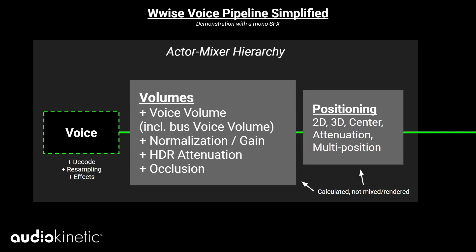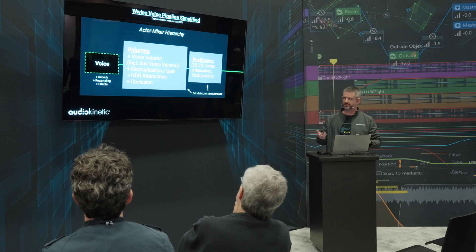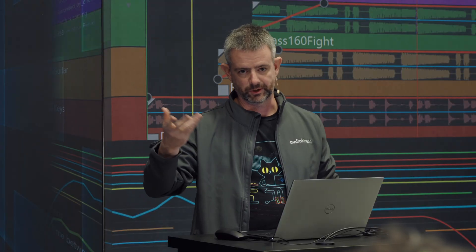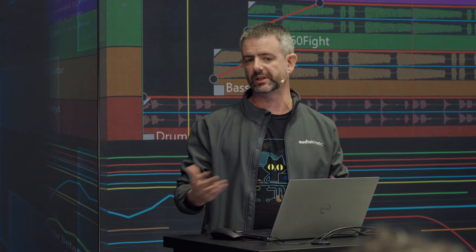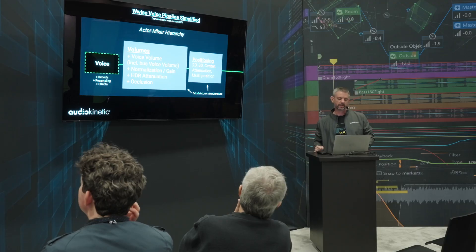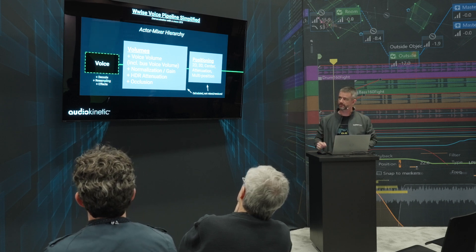It starts with a voice — after we've decided the voice will exist. That means after the limiting system, like do we have too many voices already playing, or is that voice too low to be heard? Once this decision is made and we're instantiating the voice, we start by finding it in memory or on disk and begin decoding. If the sampling rate is not at Wwise's native sampling rate of typically 48k, it's going to be resampled at that step. And if there's an effect directly on the source SFX in the Wwise project, it gets applied there.